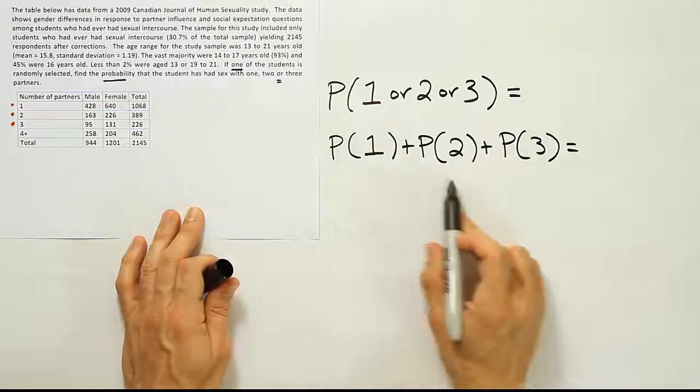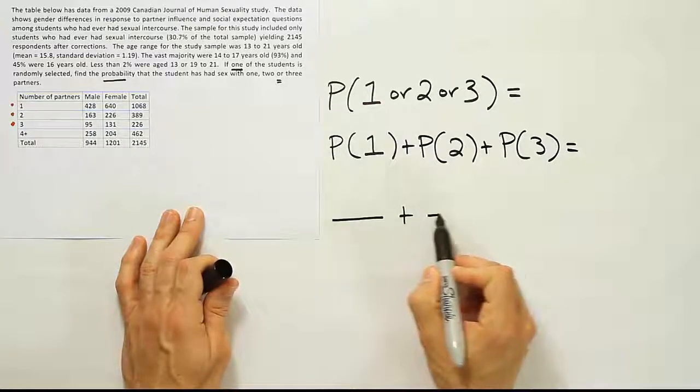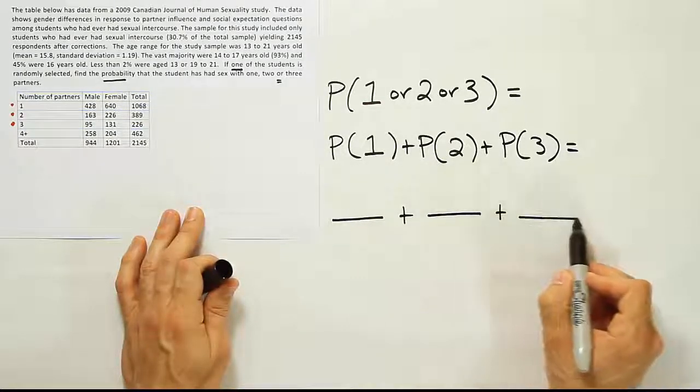To work out those individual basic probabilities, we finish the problem. So let's draw a fraction for the first one, a fraction for the second, and a fraction for the third.